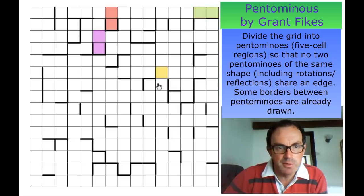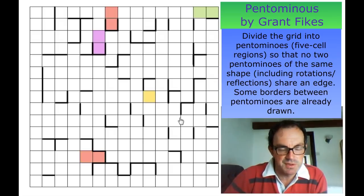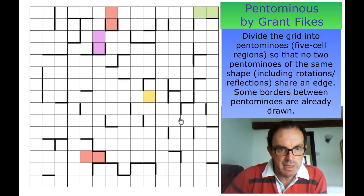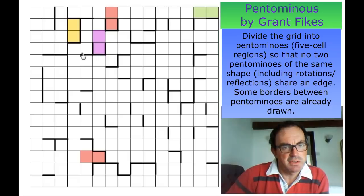I'm floating around the grid with no idea how to start this puzzle, so I'm just trying to find domino situations — cul-de-sacs, I suppose — where I can definitely lock two cells into the same pentomino. I'm running out of these now so I'm going to have to think about something else. Let's look at this domino — that's an interesting one.